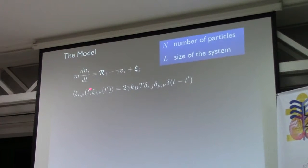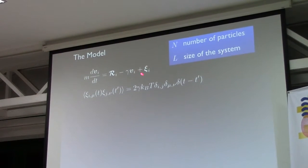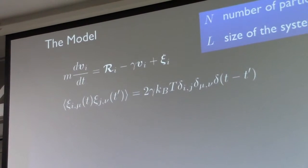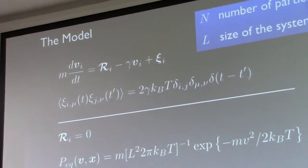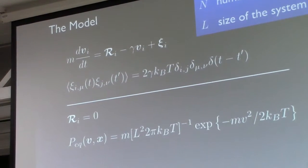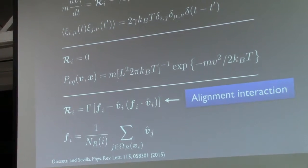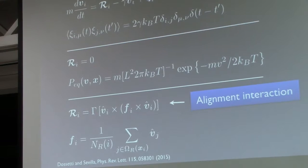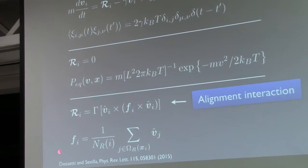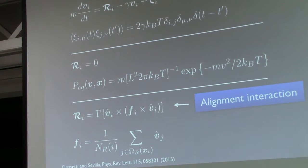We developed this simple model. We started with the Langevin description for Brownian motion for each particle. We have a Brownian particle and introduced this force, which is the alignment force. When this force is zero, we have a gas of Brownian particles where the distribution of their velocities corresponds to the Maxwell-Boltzmann distribution. The interaction we propose is that within a radius of finite size, a particle interacts with its neighbors and tries to align its velocity direction with that of its neighbors.